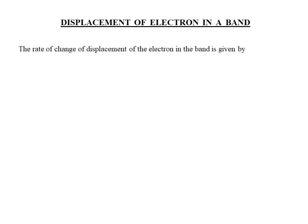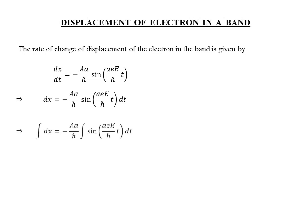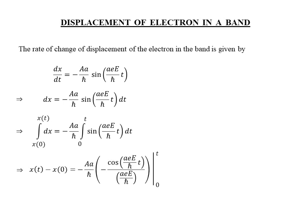We have the rate of change of displacement of the electron in a band as this. To solve for the displacement, first move dt on the left to the right, then integrate dt between the time interval 0 and t. On the left, the corresponding integral limits for the displacement are x(0) and x(t). Carrying out the integration on the left and plugging the limits for the displacement, we get this. Similarly, carrying out the integration on the right, we get this expression. The negative sign is because of the trigonometric sine function in the integrand. There are a few parameters that can be cancelled out on the right side, which we can carry out now to bring it to a simpler form.